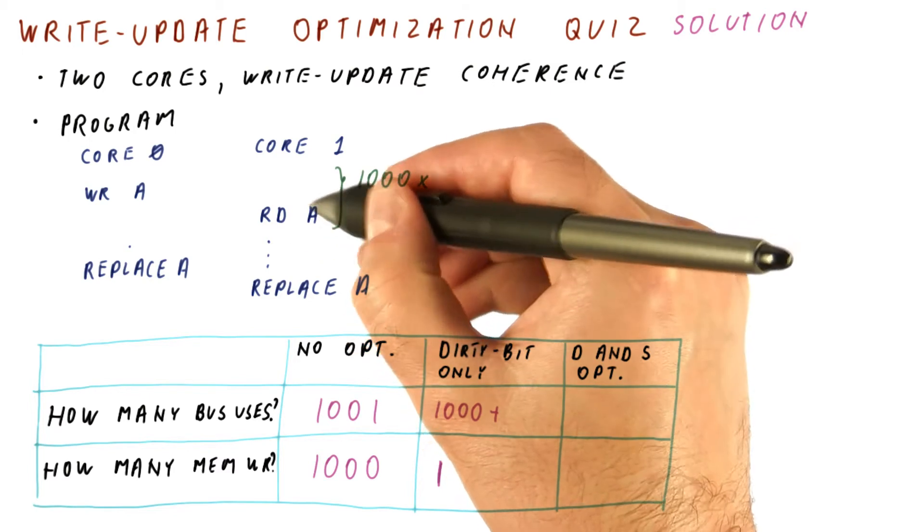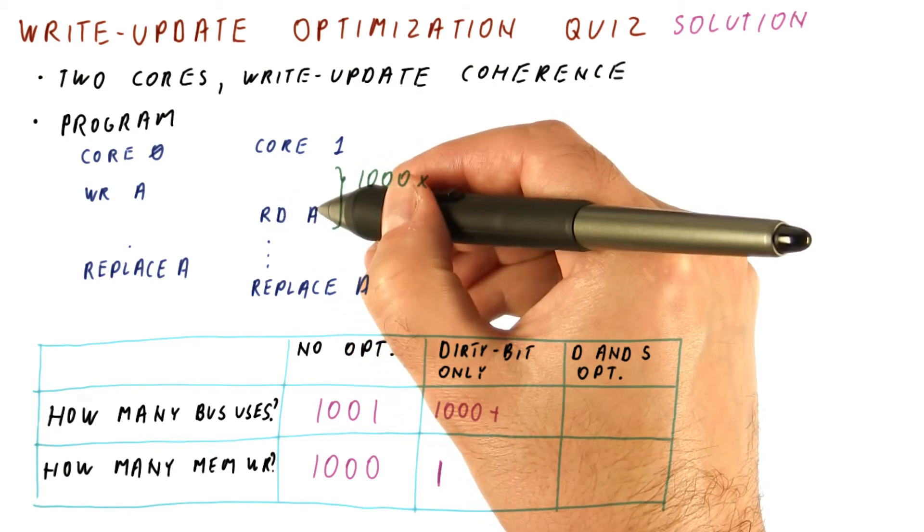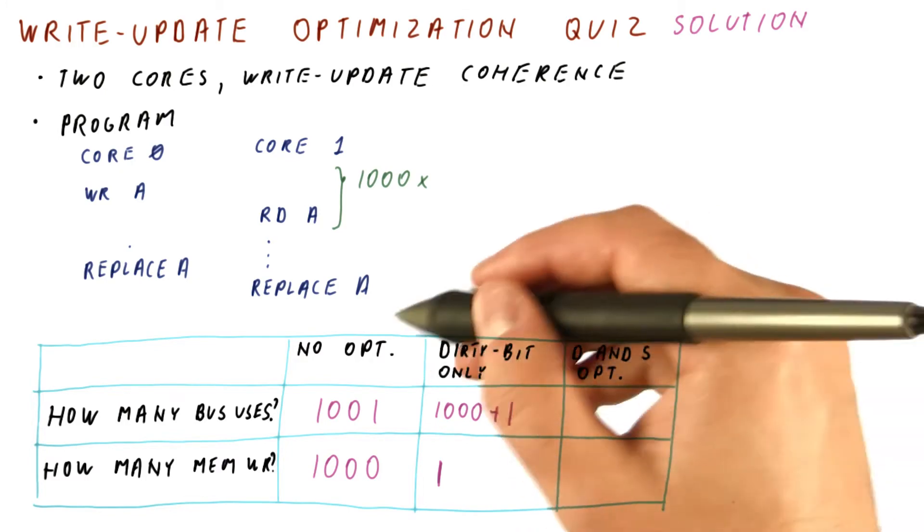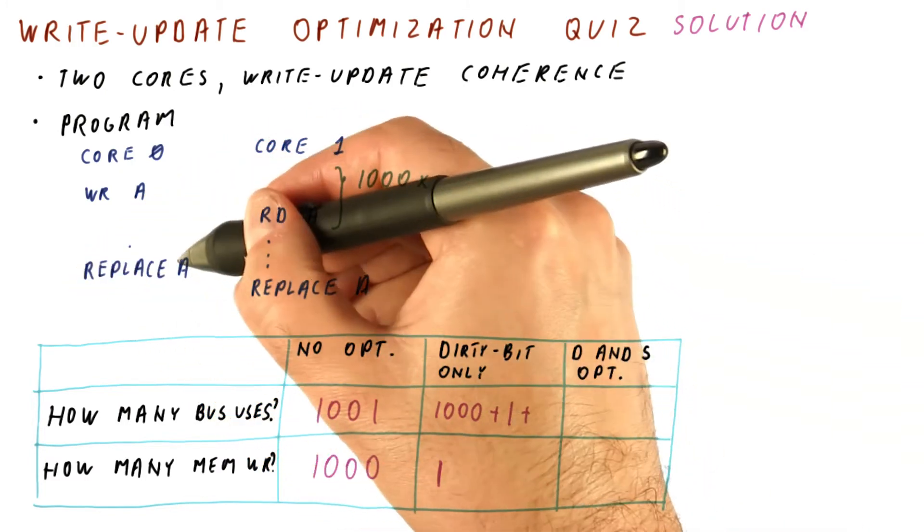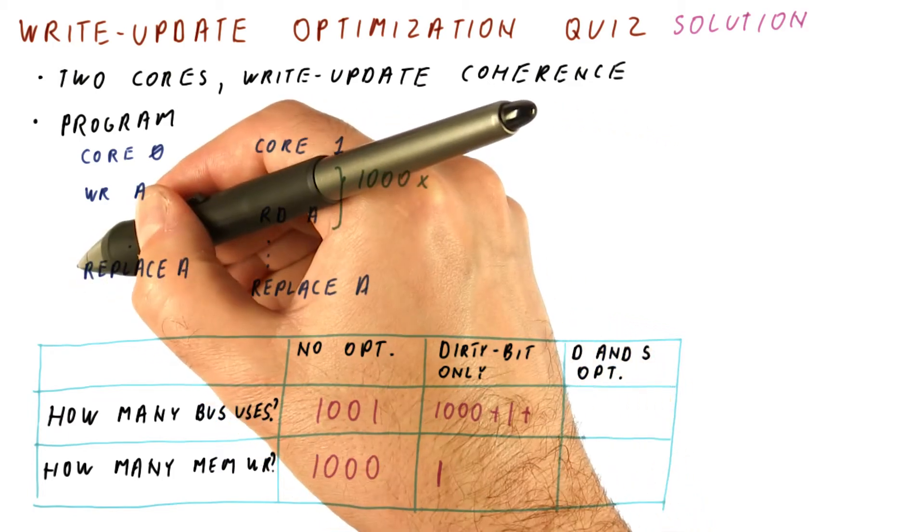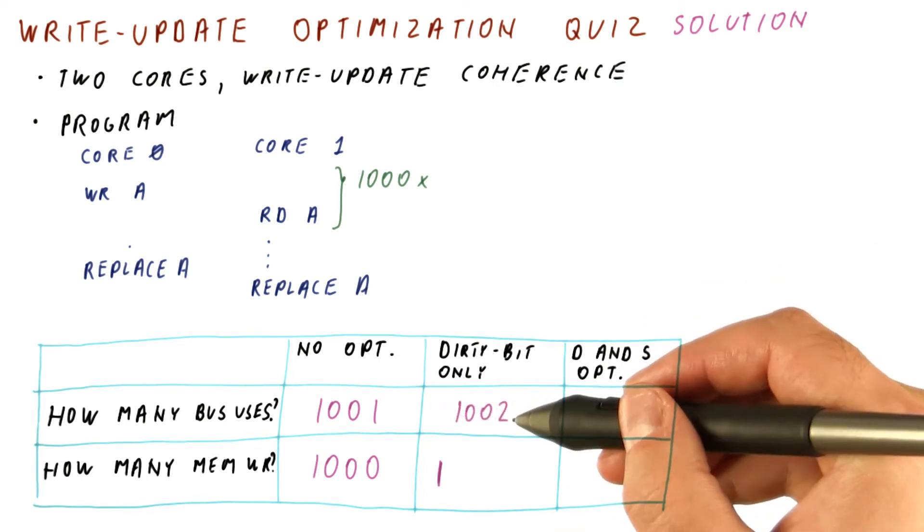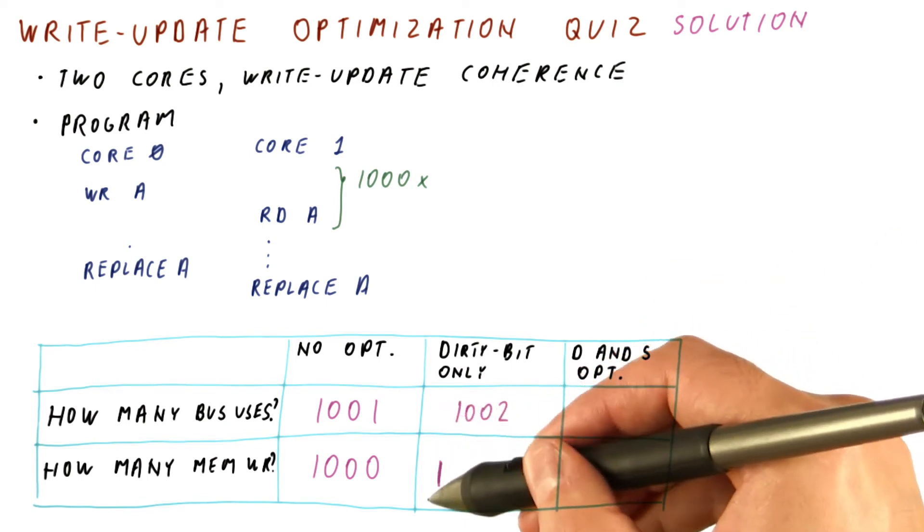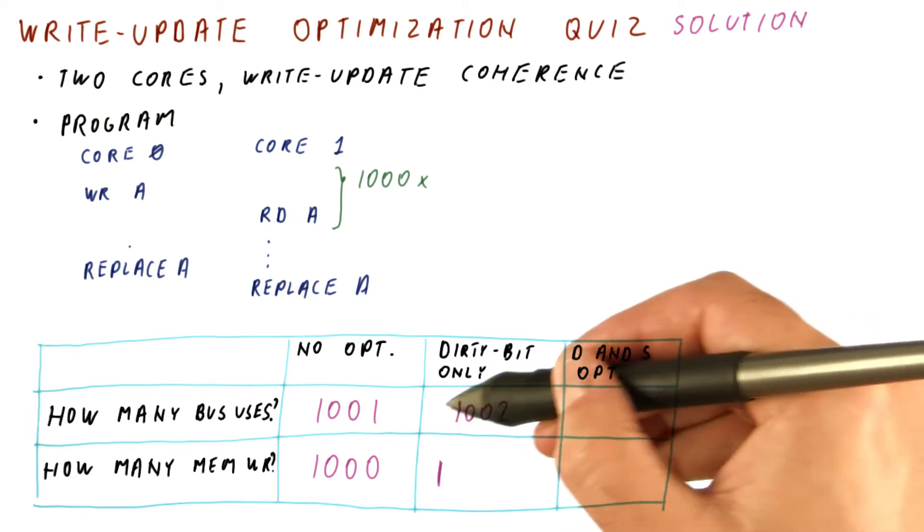We still have the one access because the first read is a miss. After that, they're all hits and don't go to the bus. And now, we have an additional bus access because the replacement of A here needs to send the data to memory, for which we need a bus access. So overall, we reduce dramatically the number of memory writes in exchange for one more bus use.